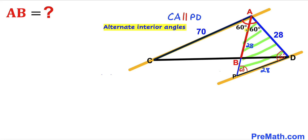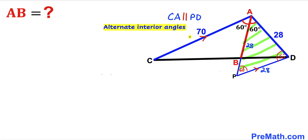Now let's make an observation. We can see that the angle at A (60 degrees) and the angle at P are alternate interior angles, since AP is our transversal. Therefore we conclude that line CA is parallel to line PD.